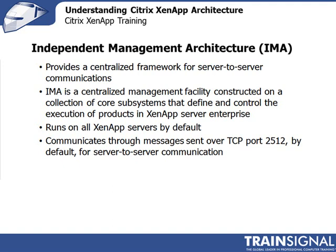IMA is also how you communicate between your management console and the XenApp servers — commands from your management console are sent via IMA to the different XenApp servers. XenApp servers communicate with one another over TCP port 2512, and you manage XenApp servers from your management console over TCP port 2513. IMA is strictly for management purposes — server-to-server communication and issuing commands from your management console. It is very different from the ICA protocol, even though there's only a letter difference in the abbreviation.